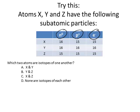How do you know which are isotopes? The answer is that you look for two that have the same number of protons. So the ones that have the same number of protons are X and Z. So the answer is X and Z.